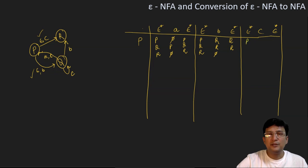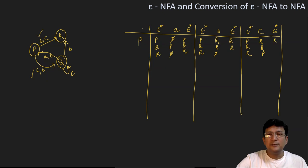For transition with c, we first compute the epsilon closure of p, that is {p, q, r}. So p on c moves to r. Now q on c remains at state q and it moves to state p as well. Epsilon closure of r is r, epsilon closure of q is only q, and epsilon closure of p will be {p, q, r}. Taking the union of these, this will be {p, q, r} only.